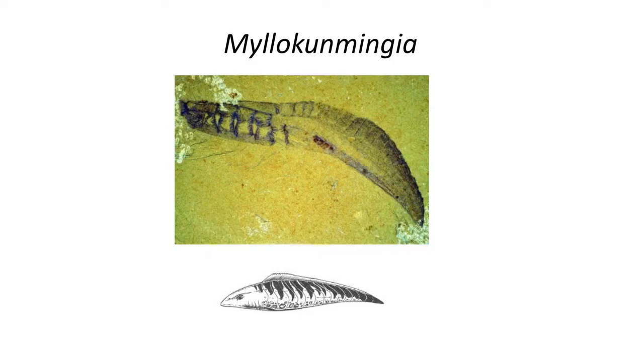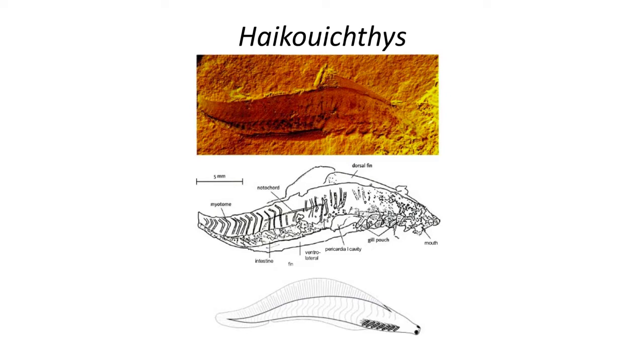Early vertebrates appeared during the early Cambrian. These tiny, ancient, worm-like vertebrates include some of the remarkable fossils from the Xinjiang fossil site in China, including Myloquimiga, Ikuichthys, and Zhongwanichthys.